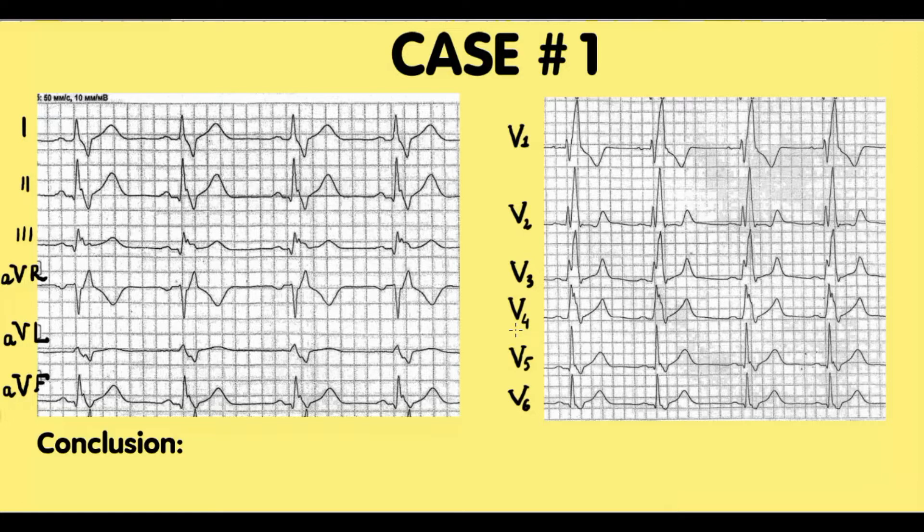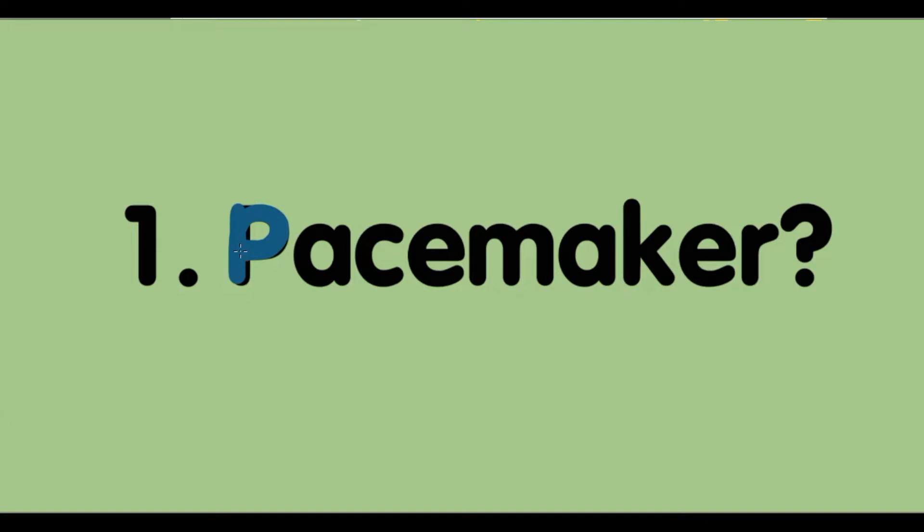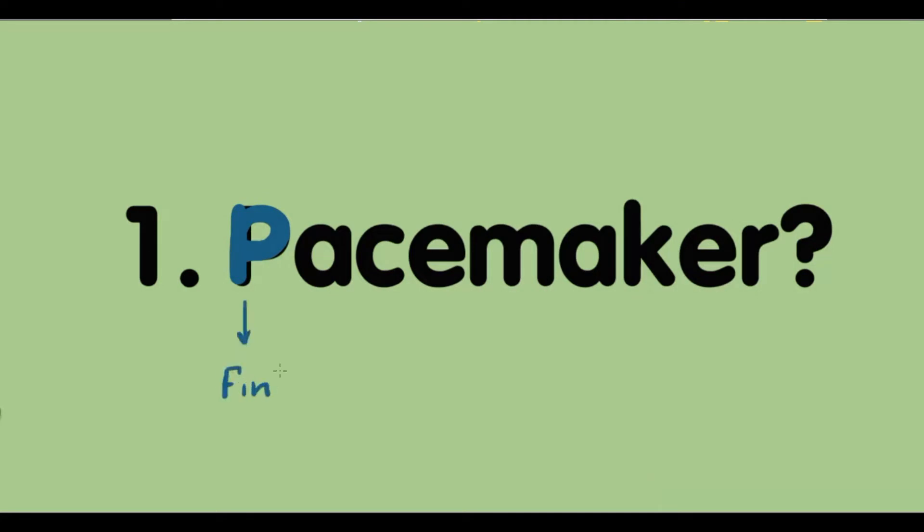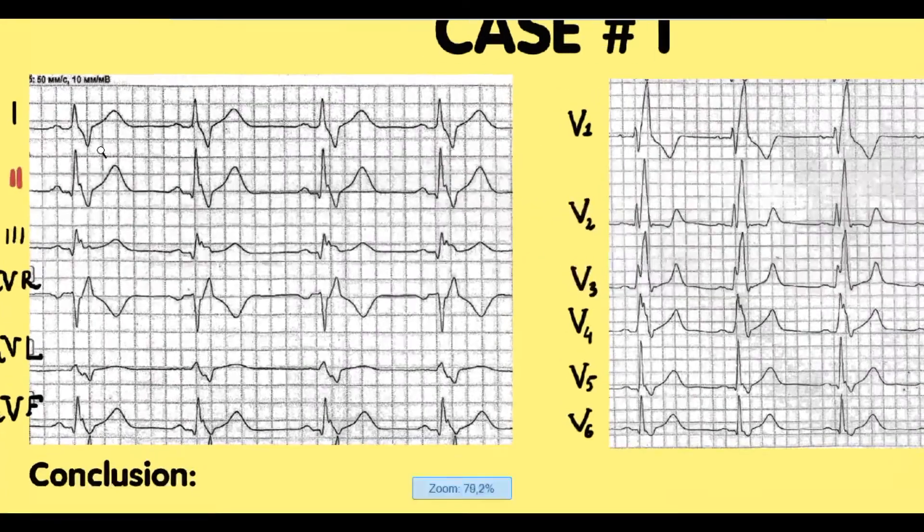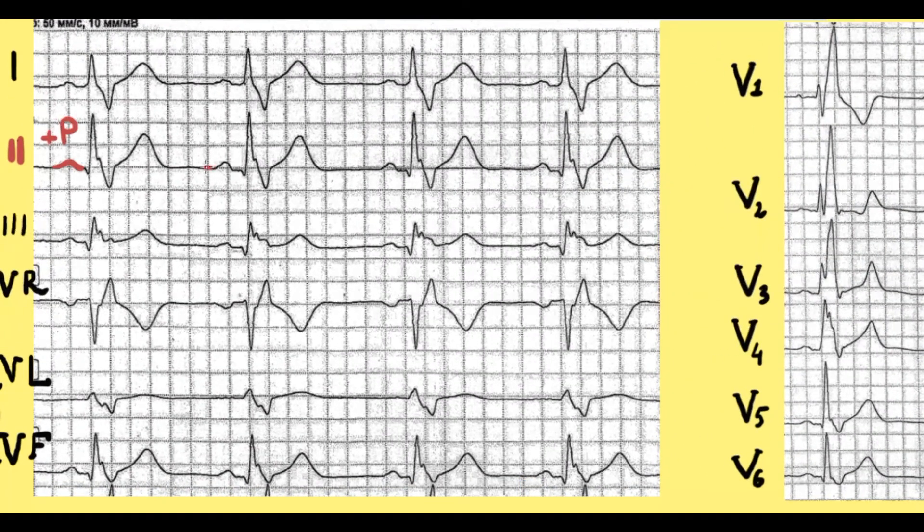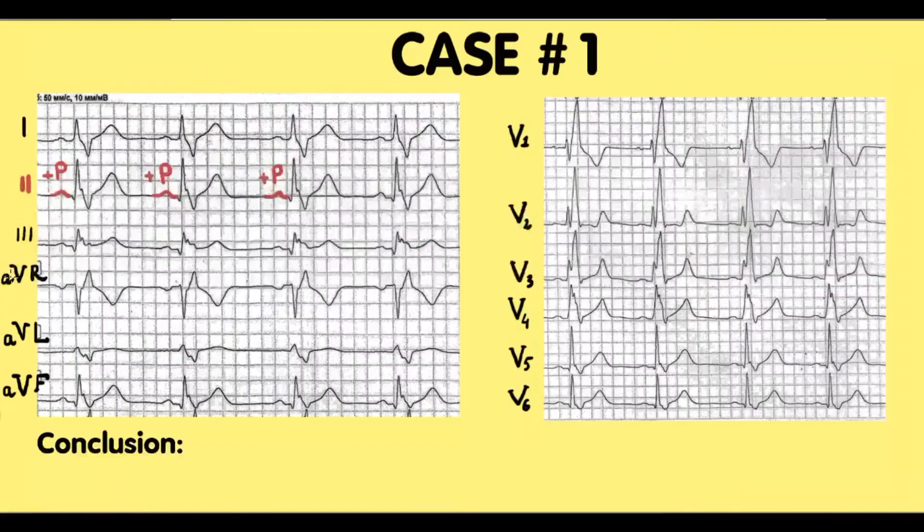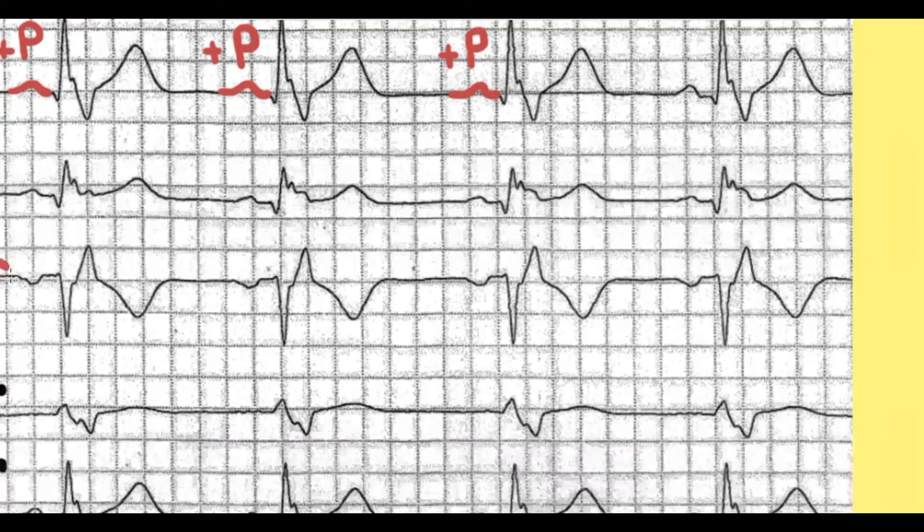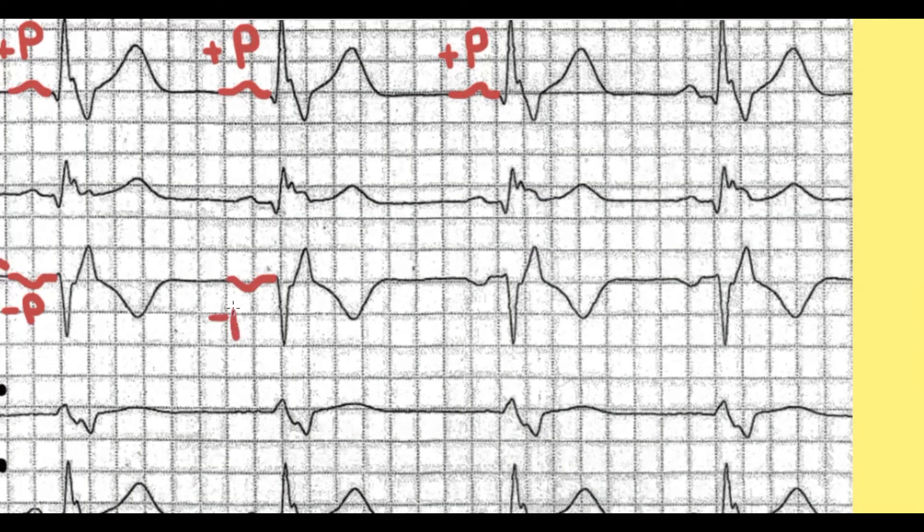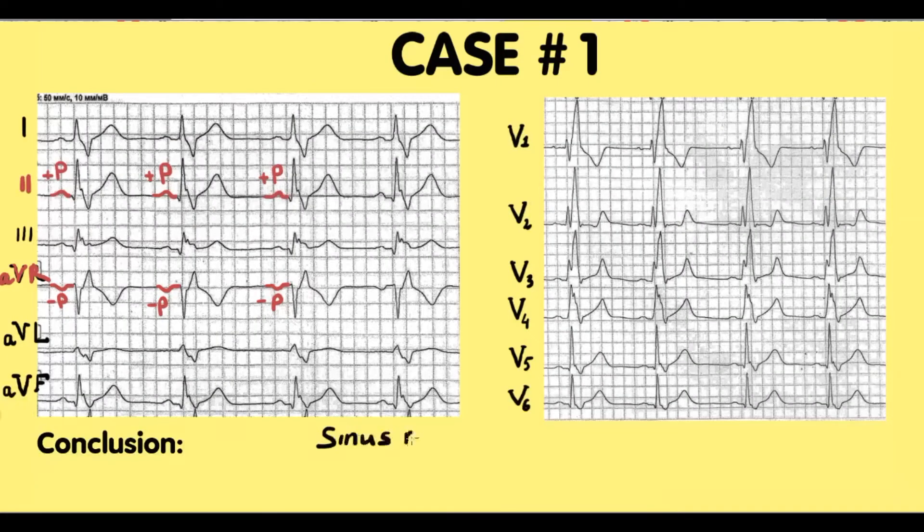For making a conclusion we need to answer a question list. The first question is who is the pacemaker of the heart, sinus node or not sinus. For this we need to find P wave in second standard lead and AVR. P wave is positive in second standard lead and negative in AVR. It means we have a sinus rhythm.